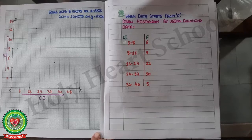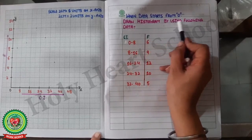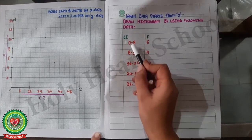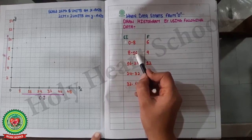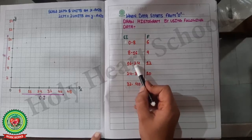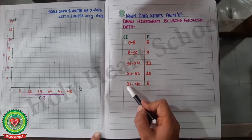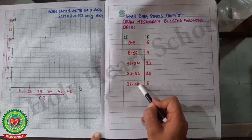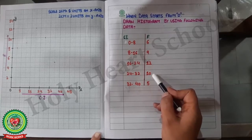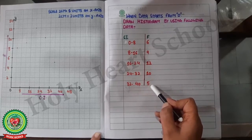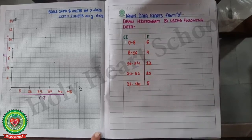Statement number one: draw a histogram using the following data. Class intervals are 0–8, 8–16, 16–24, 24–32, and 32–40, with corresponding frequencies of 6, 9, 12, 10, and 5. We will now draw the histogram using this data.